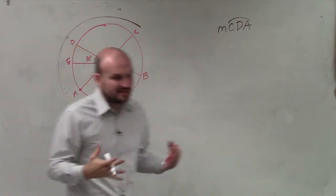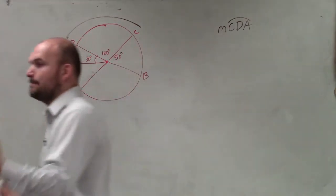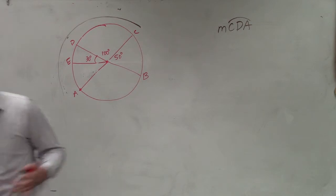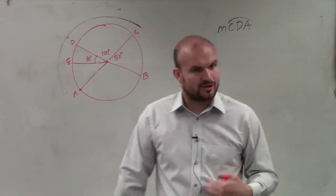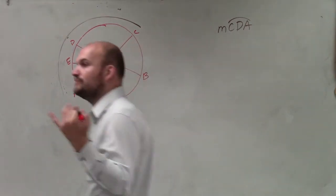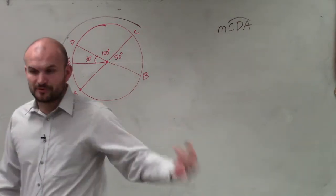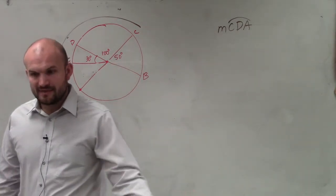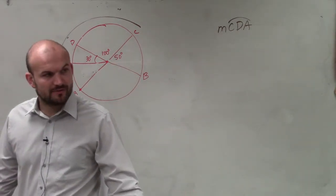Now, when we start this, again, what I talk about is determining, is this a minor arc or is it a major arc? If it's a minor arc, you find the central angle. If it's a major arc, you find the central angle and subtract it from 360, and then that's the measurement of the major arc.